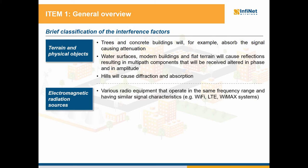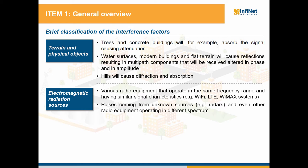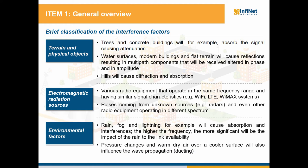Next we have the other electromagnetic radiation sources like different technologies that operate in the same frequency range and with similar signal characteristics, for example Wi-Fi, LTE or WiMAX. Other devices that generate radio signals are present as well through the shared air medium, and we can take as example the radar systems. The last category involves the environmental factors like rain, fog and lightning that will cause absorption and interferences.